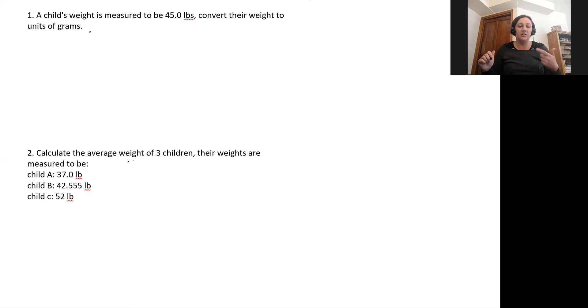Our first problem is a child's weight is measured to be 45 pounds, convert their weight into units of grams. I'm going to pull out a conversion factor for you: one pound equals 453.6 grams. So my measured value is that 45 pounds. I have three significant figures in this measurement: the four, the five, and the zero, because the zero comes after a decimal place and a non-zero number.